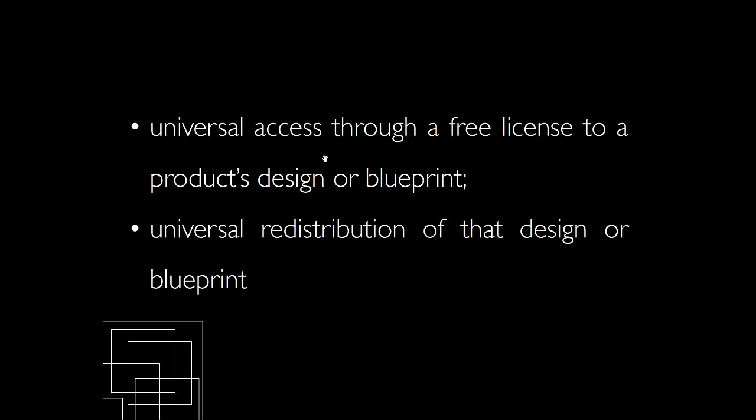So, what do we mean when we say open source? Open source is a model that promotes universal access through a free license to a product's designer blueprint and universal redistribution of that designer blueprint. In terms of software and formats, it means the software is freely available, as is its source code, and a user is able to download and install the software to as many machines as they like. They're also allowed to alter the source code. But if they choose to distribute their altered version, they must do so at no charge and also release the source code. This is where the free license comes in.